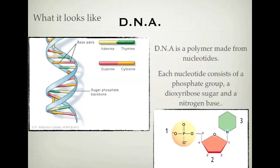So let's look at the structure and what makes DNA actually DNA. DNA is a polymer made up of things called nucleotides. Each nucleotide consists of three things: a phosphate group, a deoxyribose sugar, and a nitrogen base. These things can be found in your data booklet, and I'm going to show you how DNA comes together from the pieces in your data booklet.